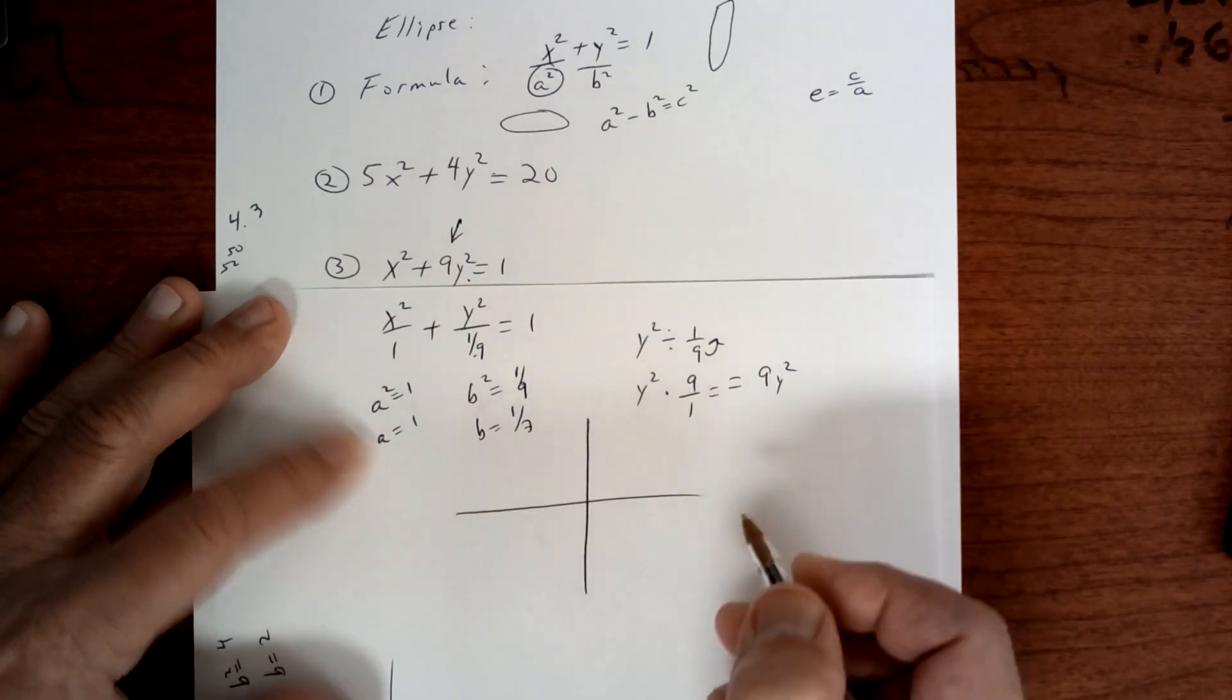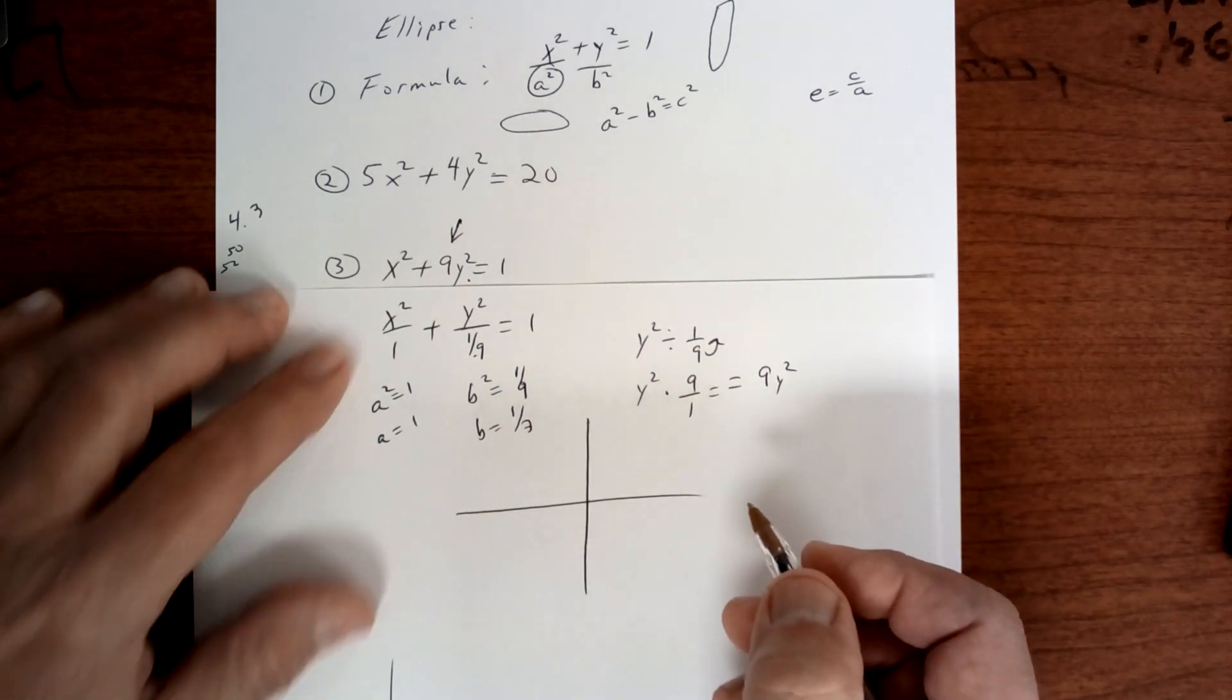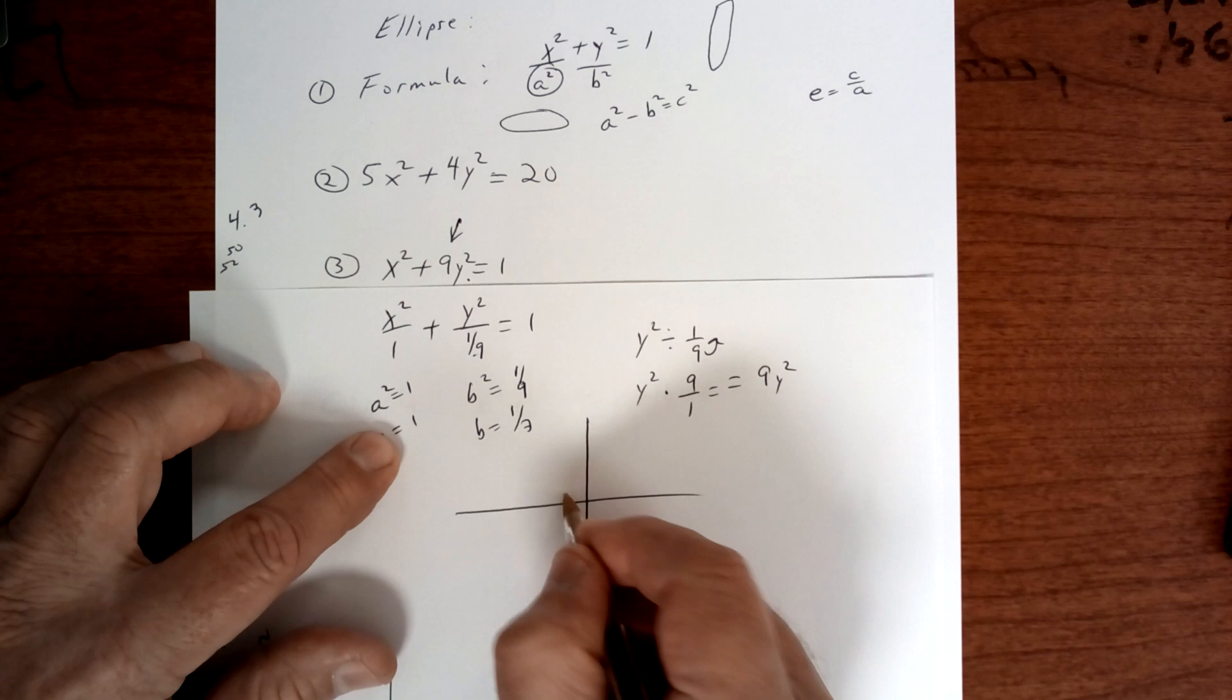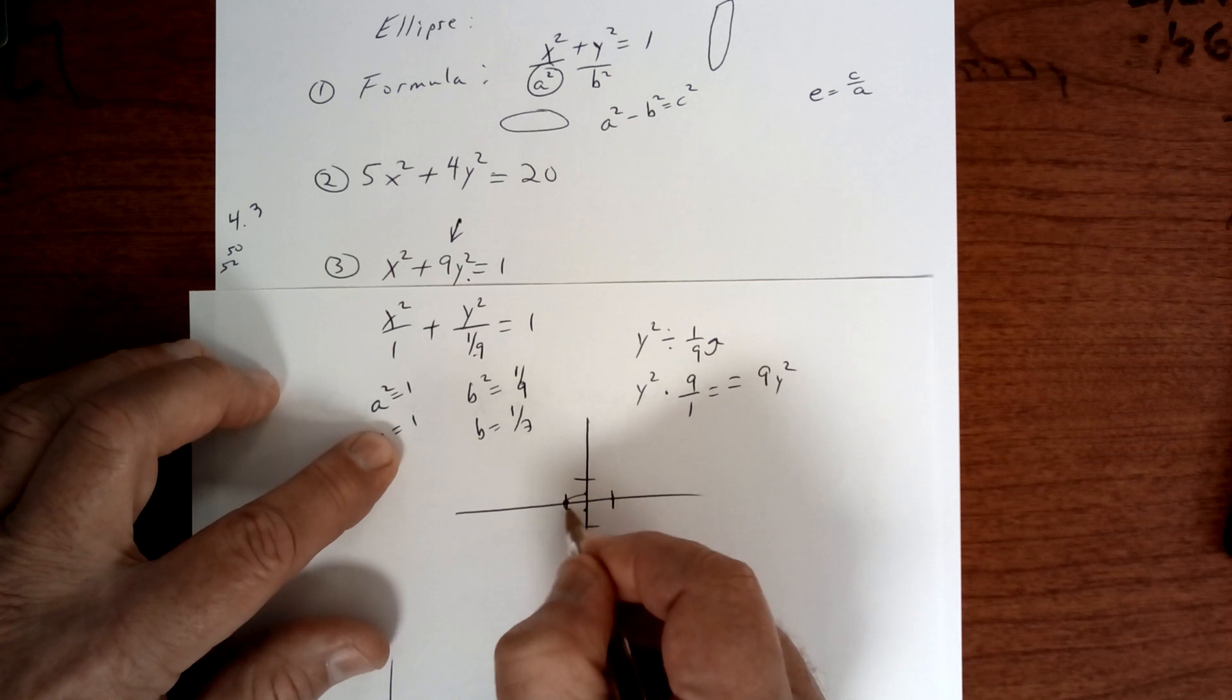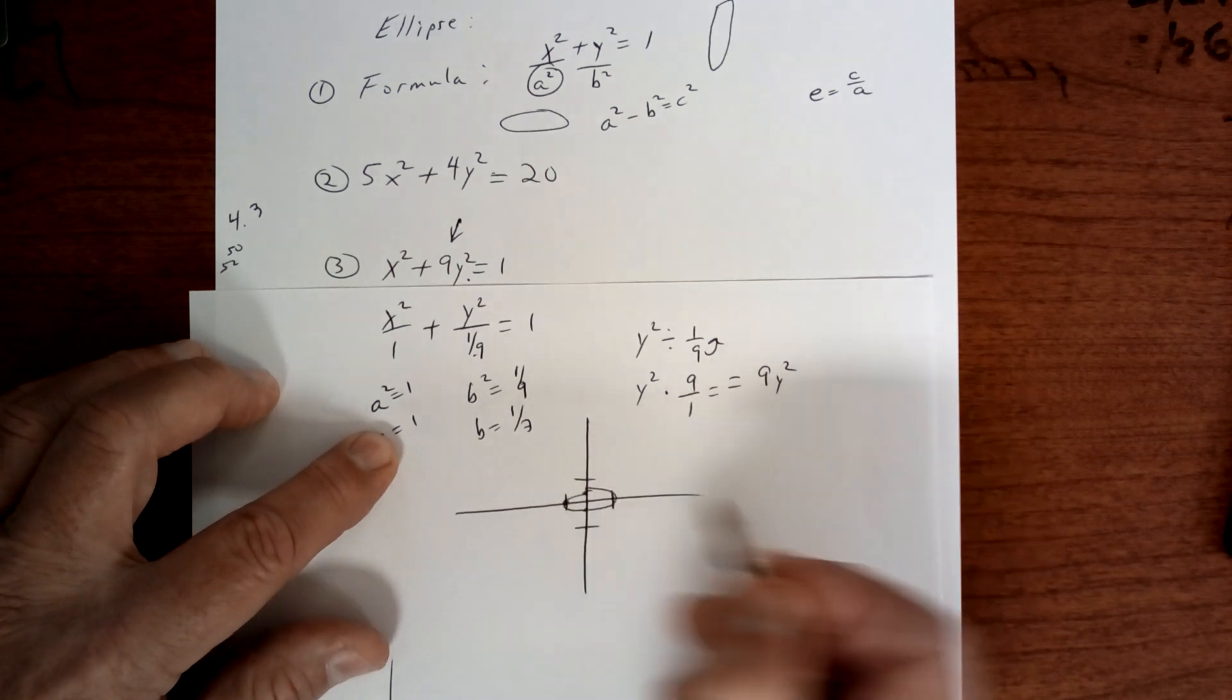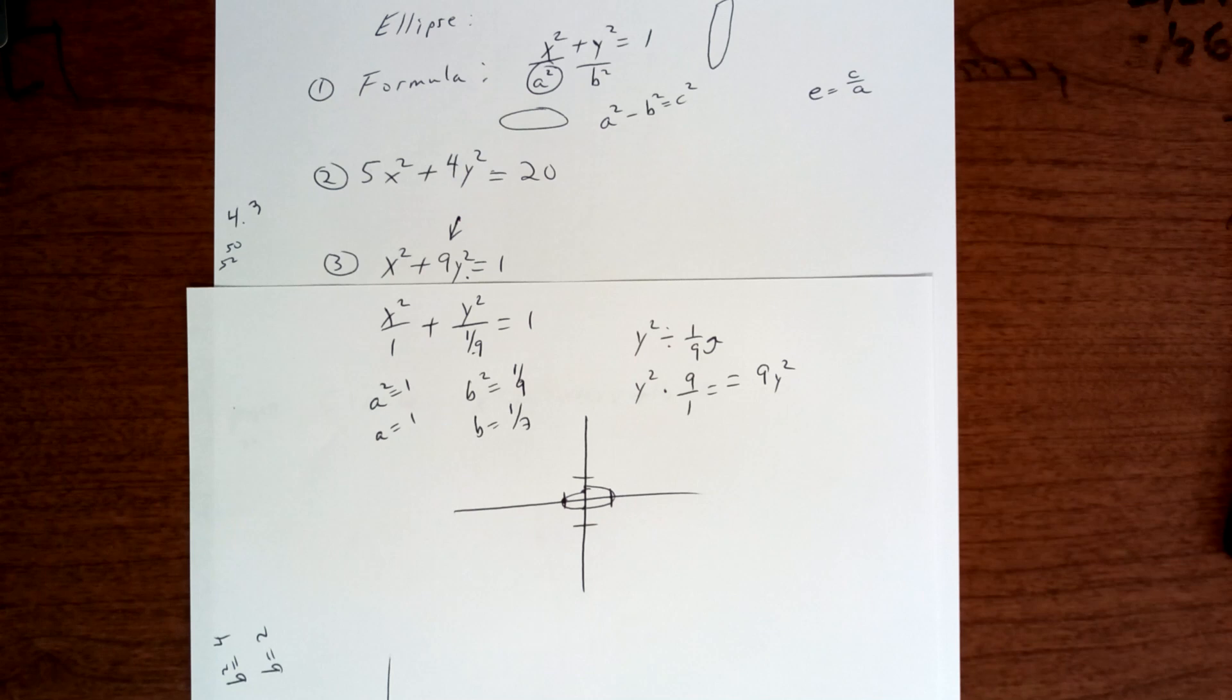Now you graph it. So on this one right here, the x is elongated along the x. So you're going to go over 1. This one, you're only going to go up a third and down a third. So this is going to look something like this. Now you still have to compute the foci.